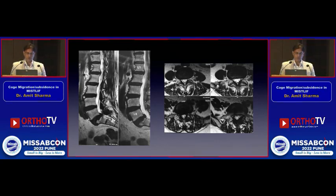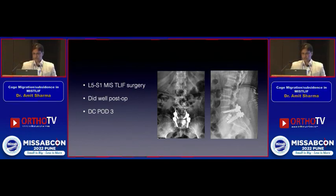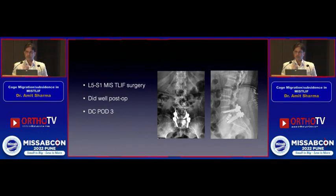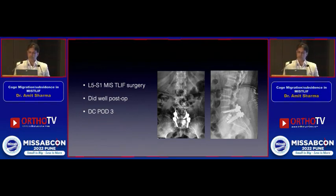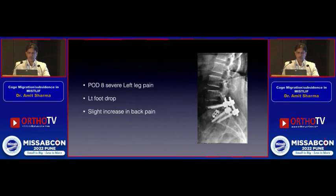Conservative treatment failed, so she was taken up for surgery and an L5-S1 MIS TLIF was performed. Intraoperatively, screw hold was not fantastic but was sufficient. There was a slight break in the postero-inferior corner of L5, the cage was sitting a little oblique and probably didn't go deep enough. Luckily, the patient did well in the immediate post-op period and was discharged on post-op day 3.